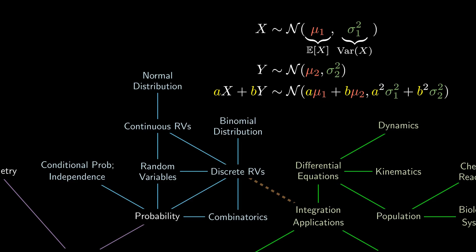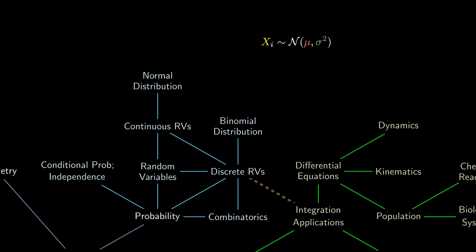A special case of this property is by considering n observations from the same distribution and computing the sample mean, or rather sampling distribution, of these observations. The result is a normal distribution with mean μ and variance σ²/n.